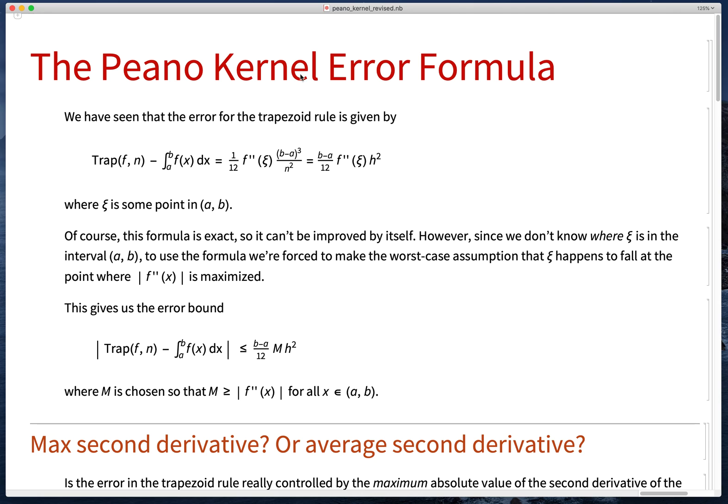Today we're going to discuss the Peano kernel error formula for the trapezoid rule as opposed to the standard estimate.